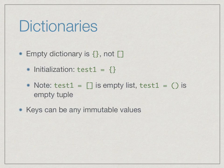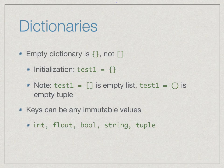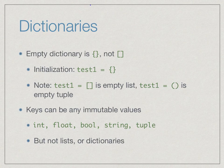For a dictionary, the key can be any immutable value: an integer, a float, a boolean, a string, or a tuple. What a key cannot be is a list or a dictionary — we cannot have a value indexed by a list or by another dictionary.